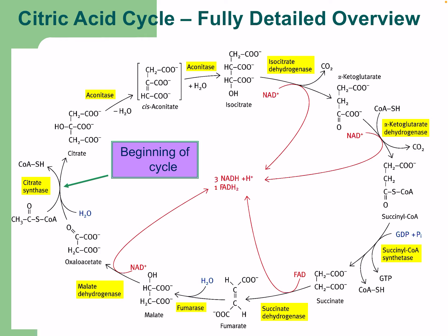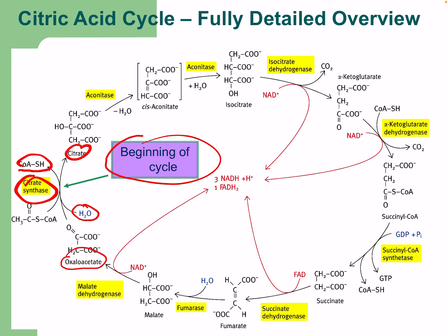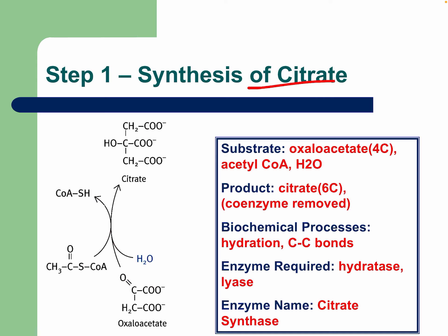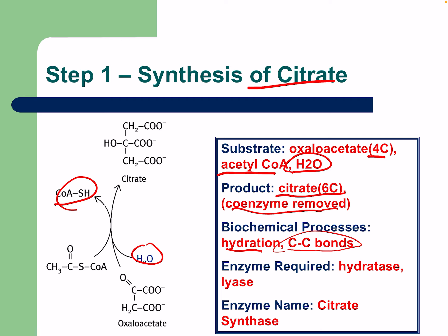Here's a fully detailed overview. We'll go through each step as we did with glycolysis. Step one: the beginning of the cycle is the combination of oxaloacetate and acetyl-CoA using citrate synthase to form citrate. The coenzyme A is removed from the acetyl group — the acetyl group goes in, but water is required for this reaction. The four-carbon and two-carbon molecules combine to form six-carbon citrate.